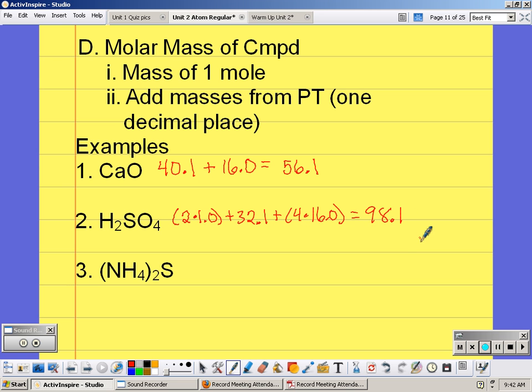If there's a set of parentheses, then you're going to distribute. What that parentheses is saying is that we have NH4, NH4, S. So we have two nitrogens, two times 14.0, plus eight hydrogens, eight times one, plus 32.1. And we get 68.1.